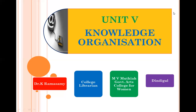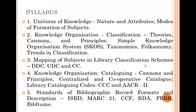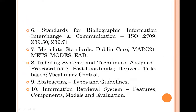I'm going to discuss Unit 5, Knowledge Organization, which consists of 10 different components: universe of knowledge, knowledge organization classification, mapping of subjects in library classification schemes, knowledge organization cataloguing, standards of bibliographic record formats and description, standards for bibliographic information interchange and communication, metadata standards, indexing systems and techniques, abstracting, and information retrieval system. Let me begin with Unit 5.1, Universe of Knowledge.